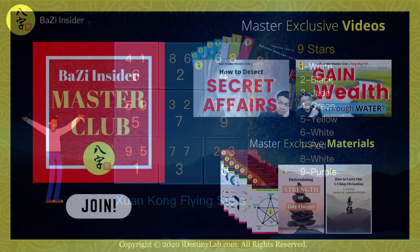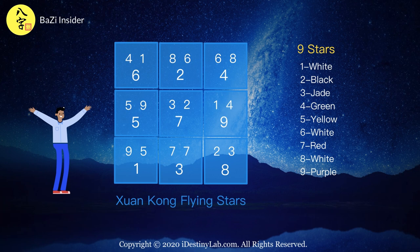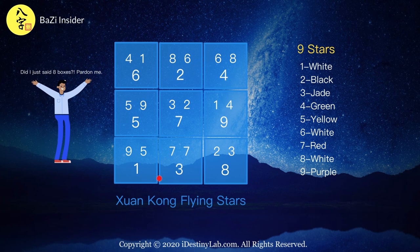Before I continue, and for the benefit of those who are new to shuen kong flying star fengshui, I will briefly provide some fundamental knowledge regarding this type of fengshui. For those who already know, you may scroll to the other segment of the video that might interest you. A flying star chart basically consists of 9 boxes of information. We call these 9 boxes palaces.